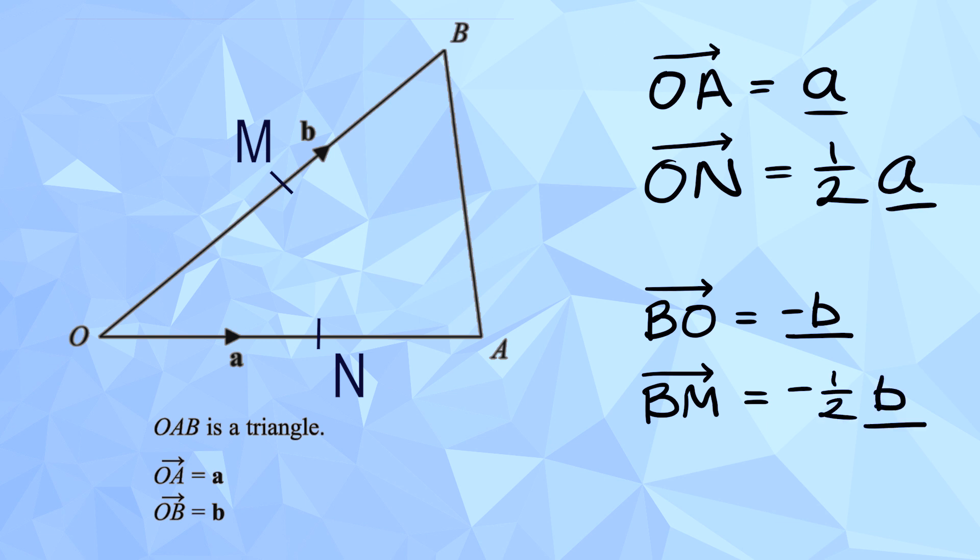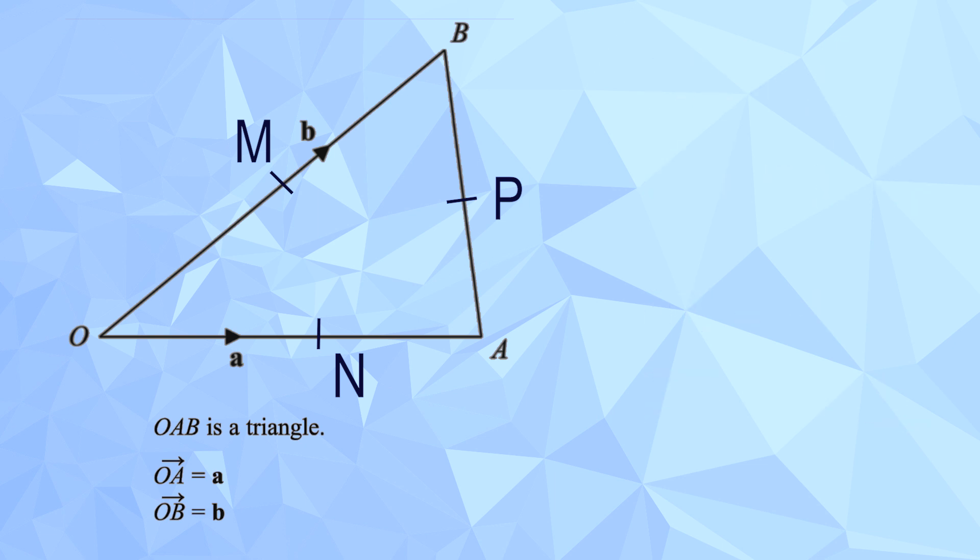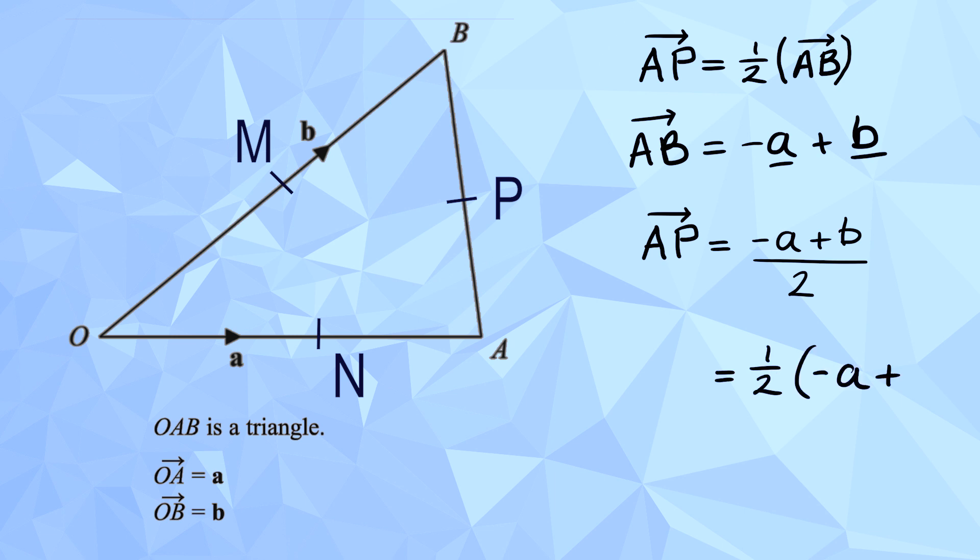But what if we were given the midpoint of A to B? We'll call that point P. How would we describe the vector AP? Well, AP is just half of AB, so all we have to do is find AB and then half it. And we actually worked out AB earlier on. It's negative a add b. So, AP is half of that, and you have options as to how you're going to write that. You could say negative a add b over 2, or divided by 2.